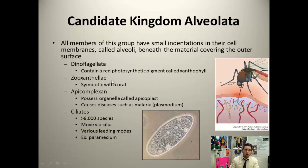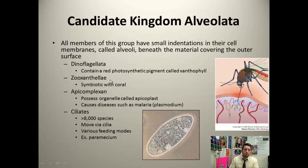The zooxanthillae are another group within the alveolata. They have a symbiotic relationship with coral — they're photosynthetic and live within coral, giving it nutrients. We've had a huge problem on our planet with large die-offs of coral. For whatever reason, the corals seem to be spitting out these zooxanthillae. Without them, the coral no longer gets those nutrients and dies. So this is a huge problem.